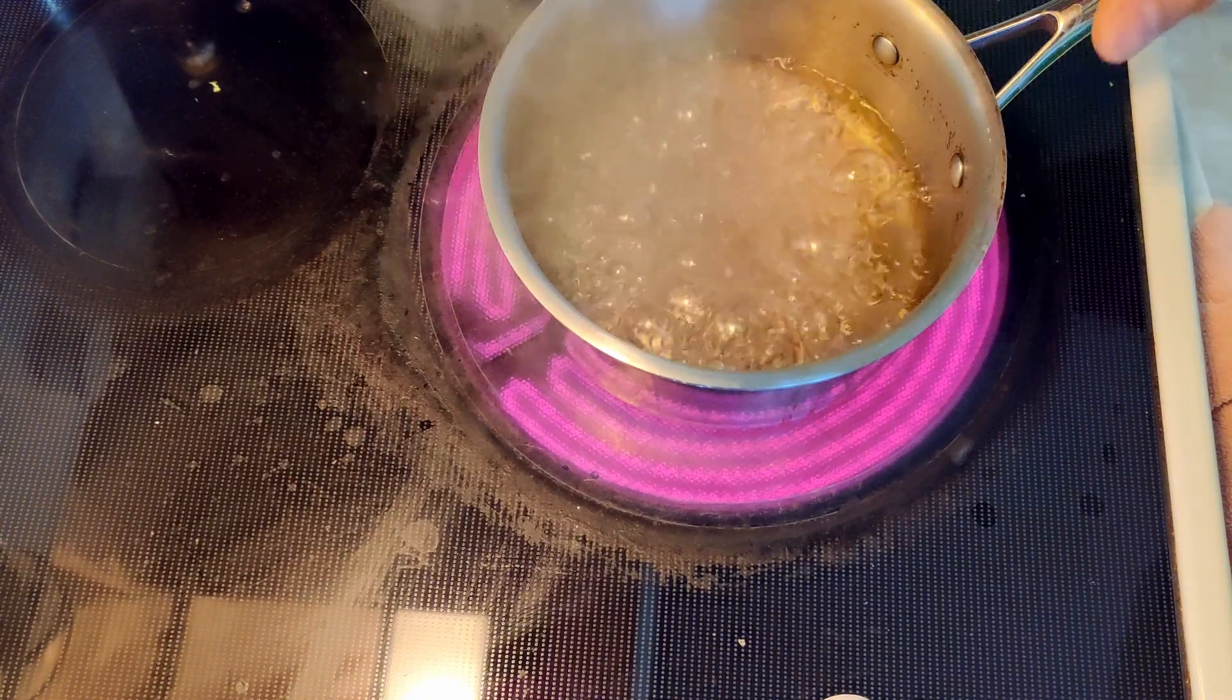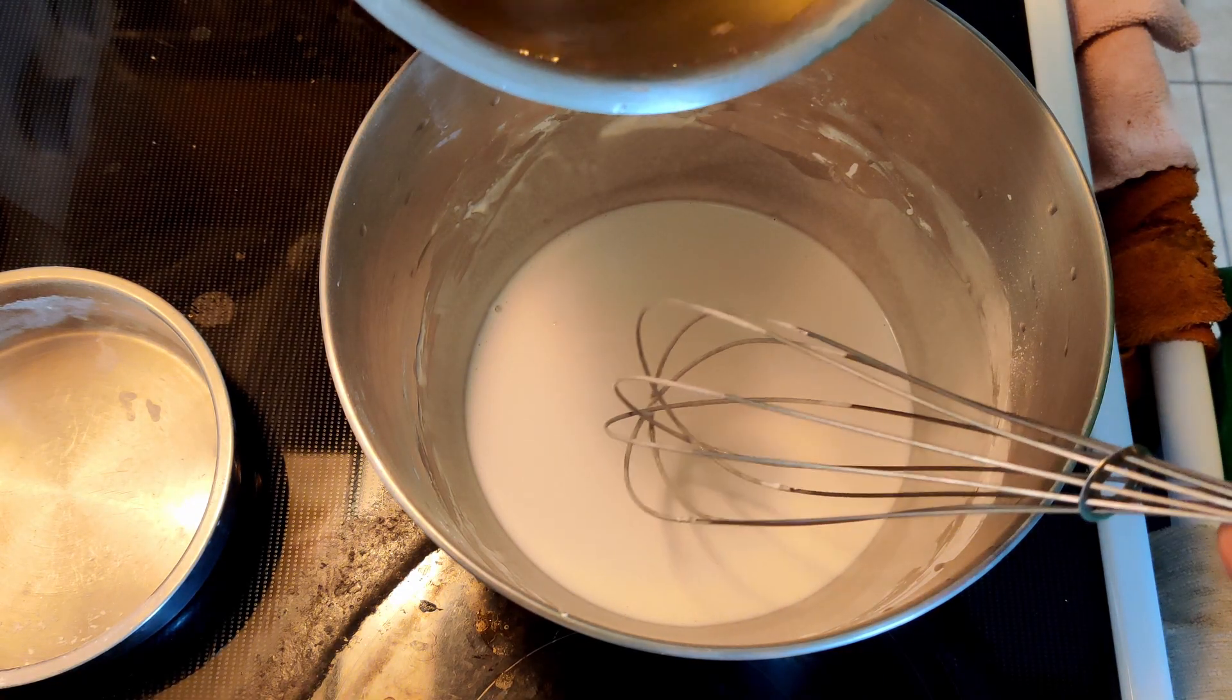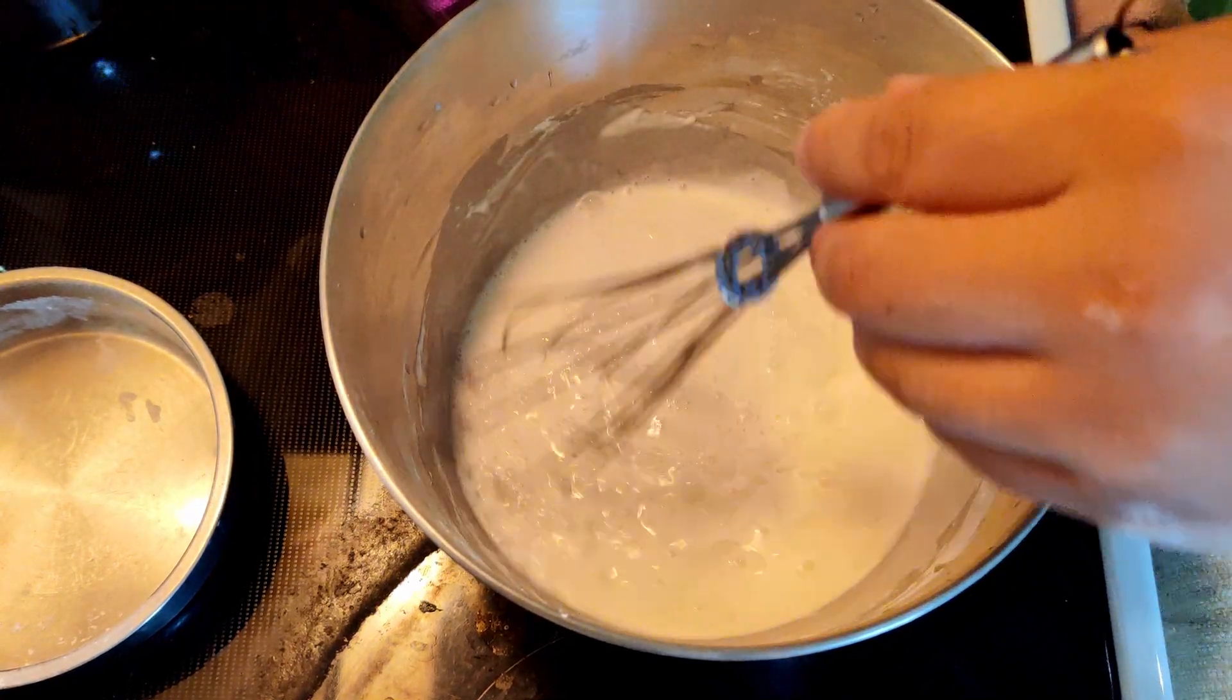So now the sugar water is boiled. We're going to pour the water into the rice batter that we did before and then mix it.